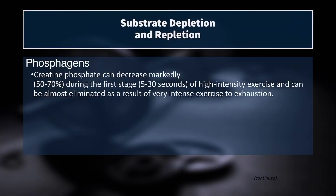As far as the phosphagen system goes, creatine phosphate can decrease markedly — up to 50% to 70% — during the first stage of high-intensity exercise, and as a result of repeated bouts can be almost eliminated. So if you're doing something like hill sprints with very little rest, or a CrossFit WOD asking you to do interval after interval, you can really exhaust your creatine phosphate stores.